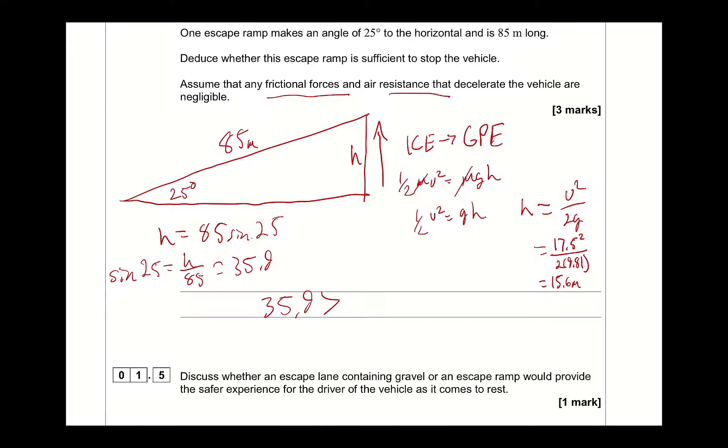So, if 35.9 is greater than 15.6. Therefore, it will be safe. Okay, so that's one method to do it. That's how immediately what I thought of was, it's about getting, you've got to think of it in terms of work and energy and how the energy transfers are happening.